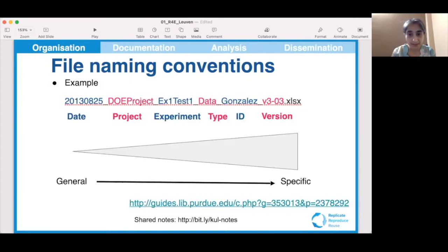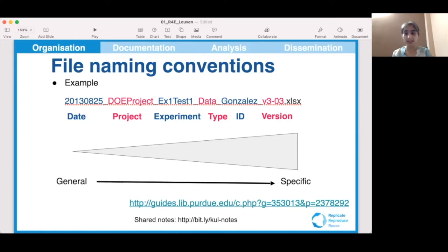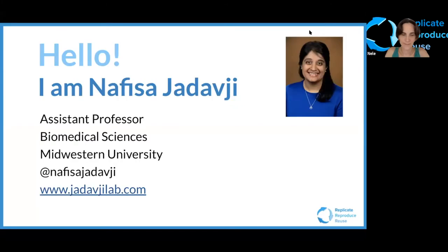Here is an example of how files could be named. You can see how the name has different components like date, project identifier, experiment, type name, and version. It's up to you how specific you'd like the file name to be — the more specific you want, the longer the name will be. Generally, file information moves from general to specific, left to right.